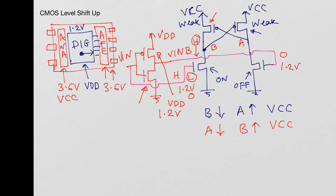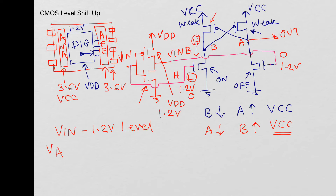Node A is the output node and it can be buffered using a VCC-level inverter. Node A is at VCC level and gives the same logic as VIN. So VIN is at the 1.2 volt level whereas node A — or V_A — is at the 3.6 volt or VCC level. This is how the level shift up circuit is constructed.